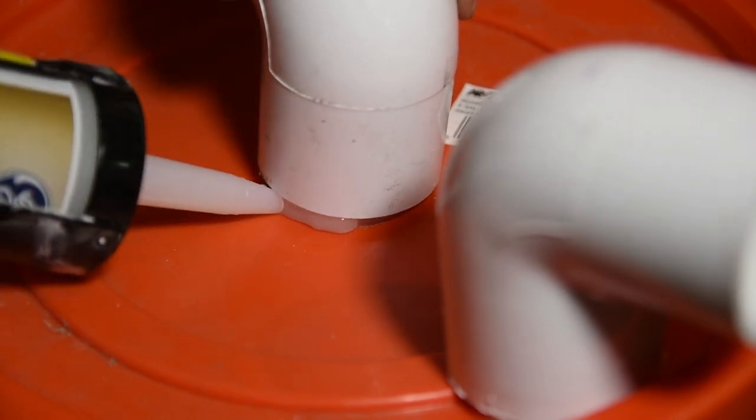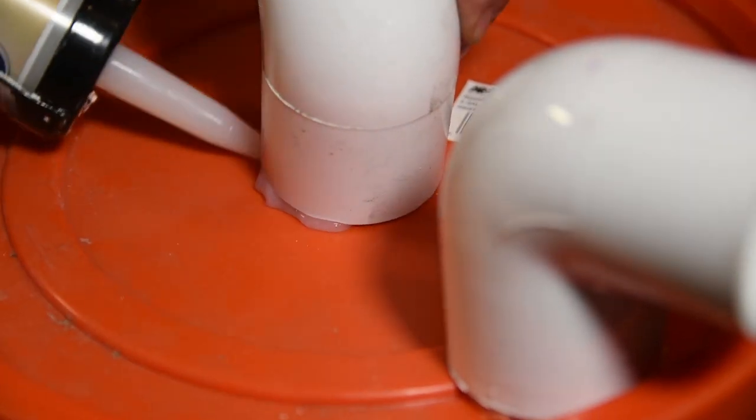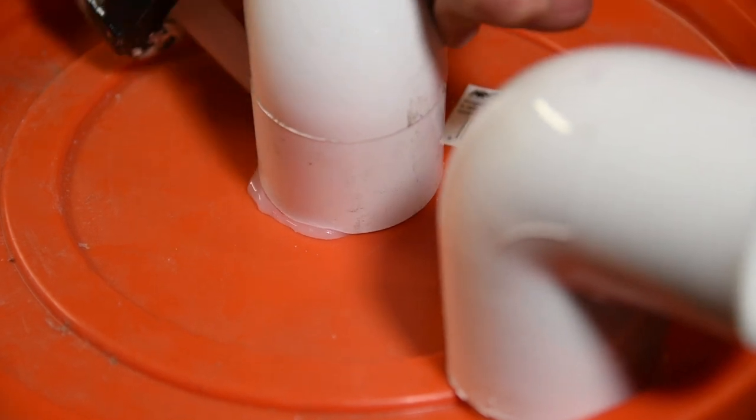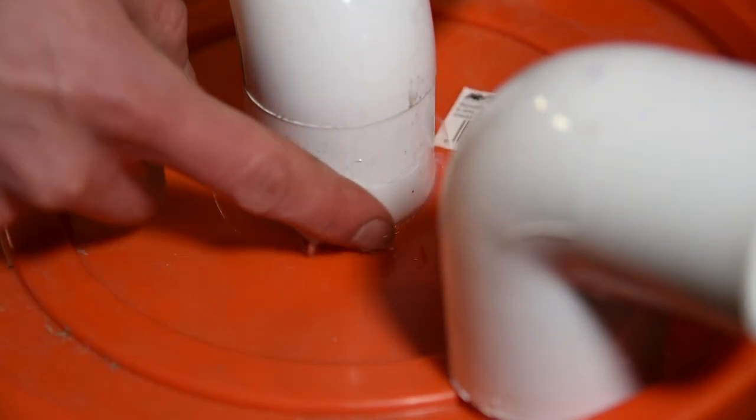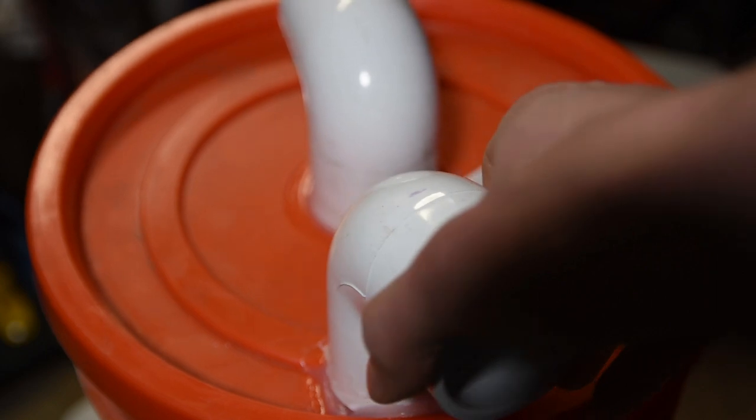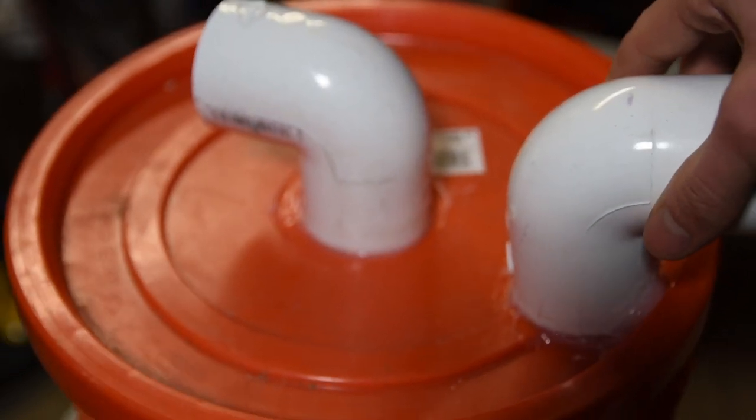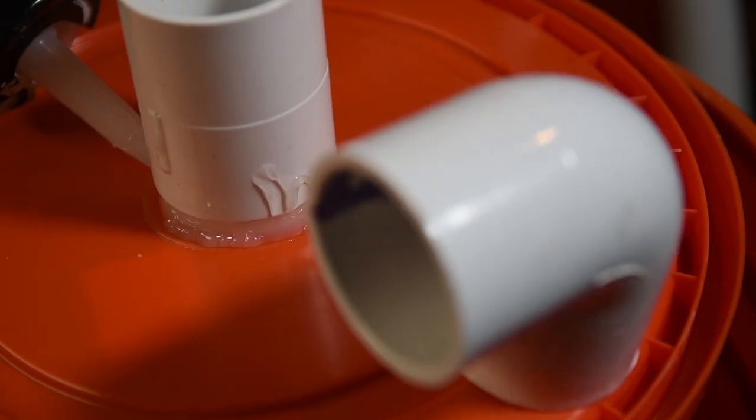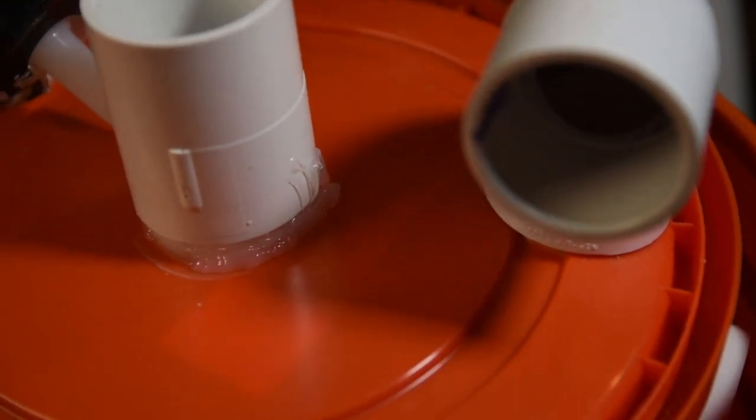I had some extra silicone around and I used it to seal the PVC to the bucket lid, so we don't end up with any air leaks. You're going to repeat the process for the other pipe and this will help lock them in place. I let it sit overnight just to make sure it's fully cured and the pieces were solidly in place. But just to be sure I flipped it over and I put silicone on the underside as well.